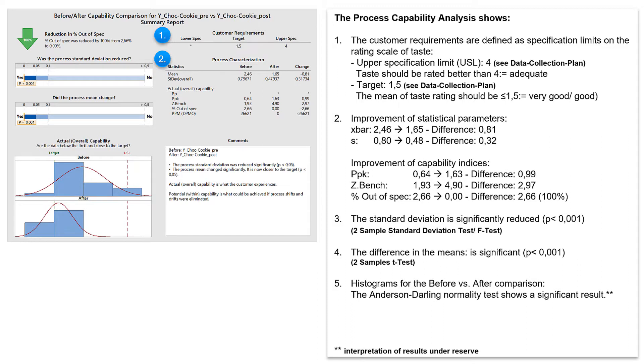This evaluation of the Minitab Assistant additionally displays statistical tests of the position and dispersion of the process. The change in dispersion is tested by the two-sample standard deviation test, i.e. the F-test.